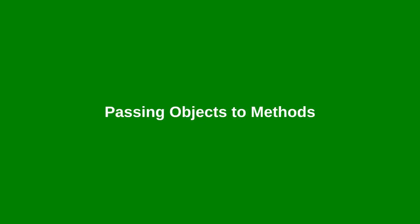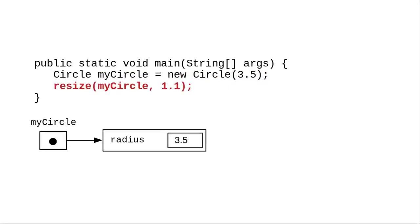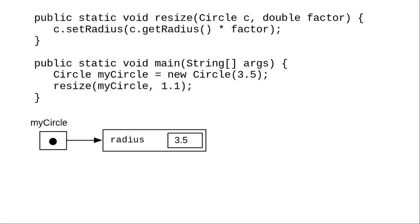Let's consider this code that creates a circle object with a radius property. We'd like to pass it to a method that will resize it by a given factor. Here's the code for that resize method.